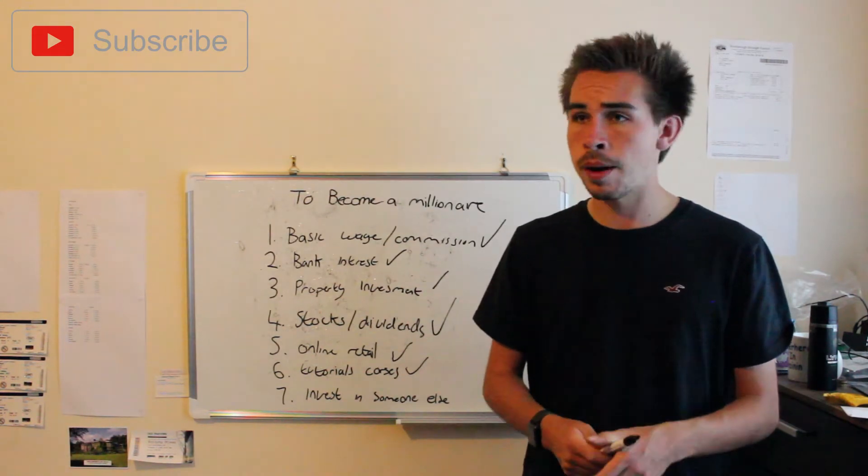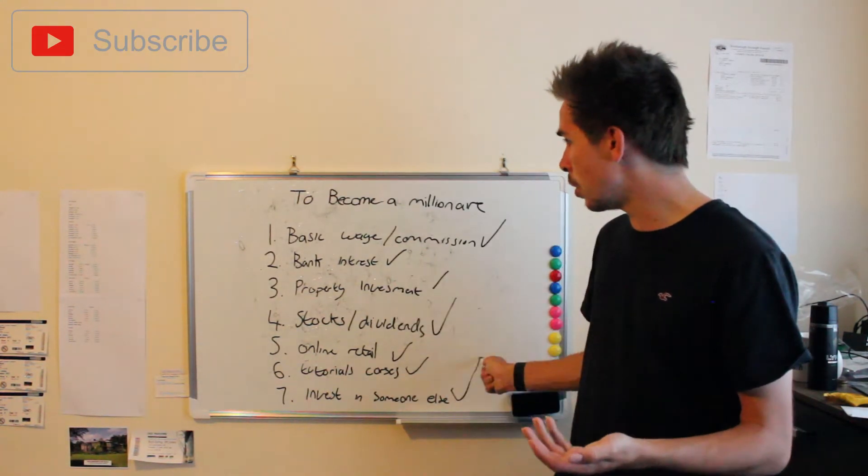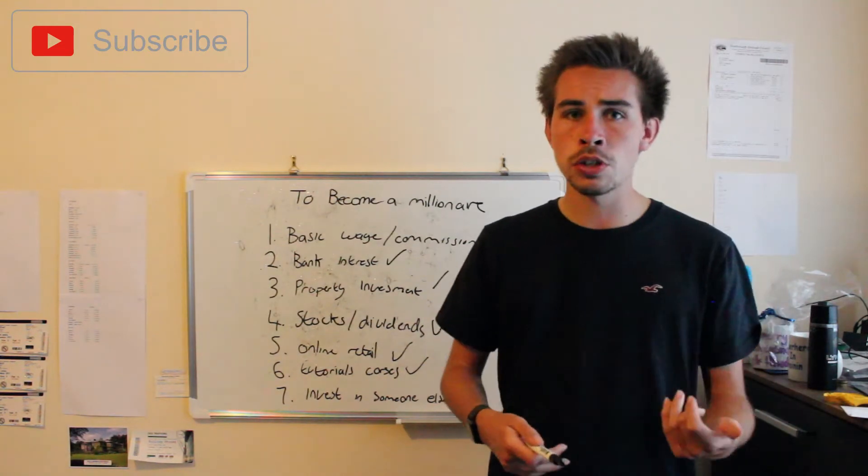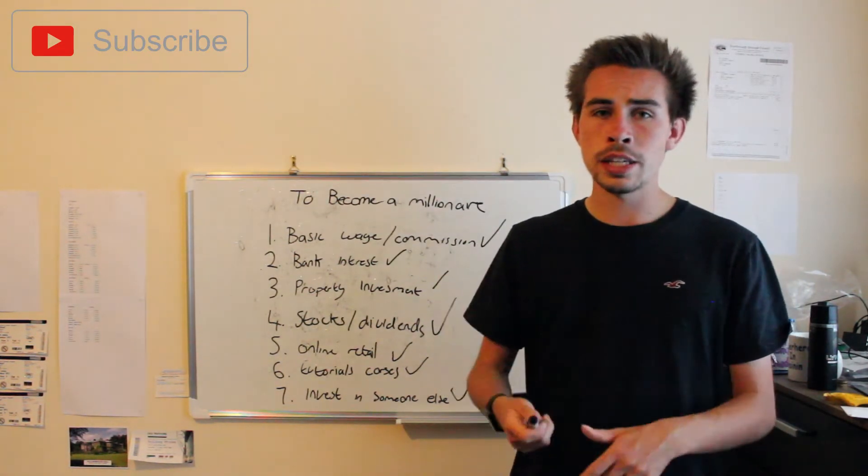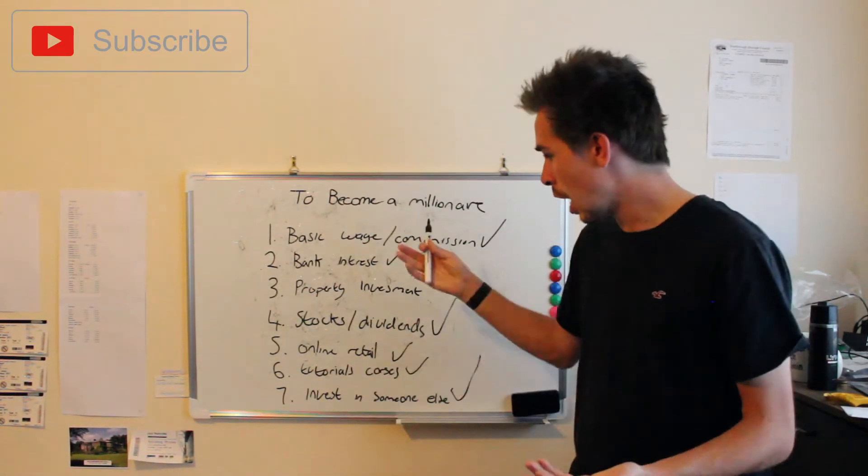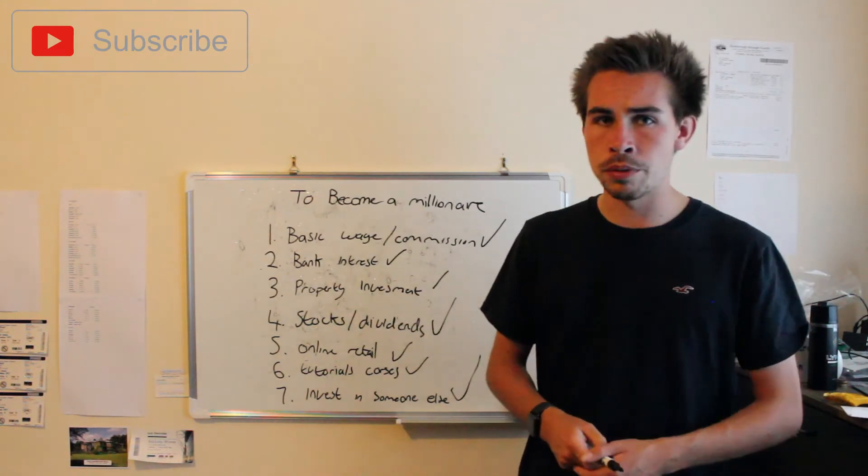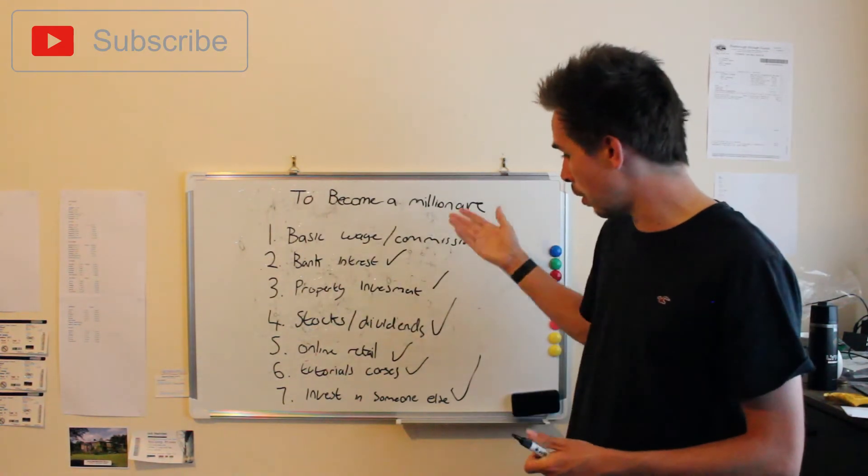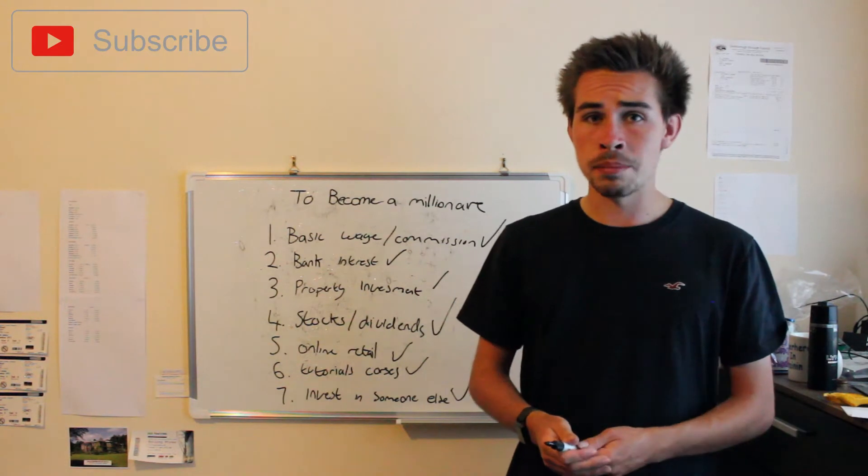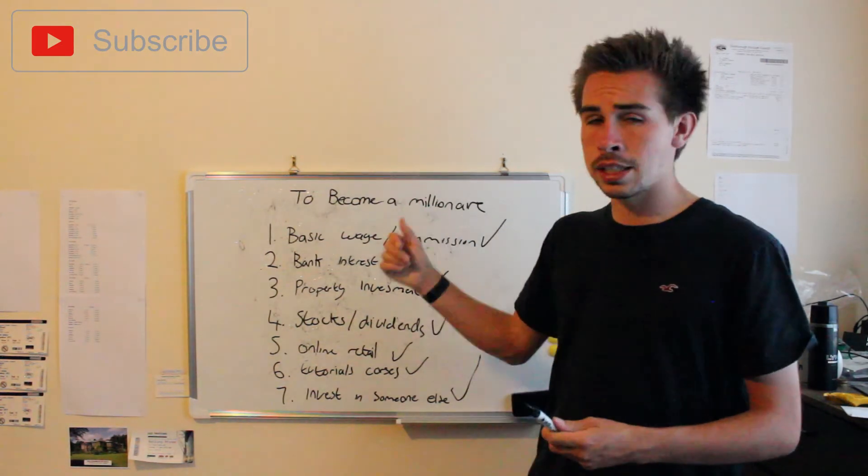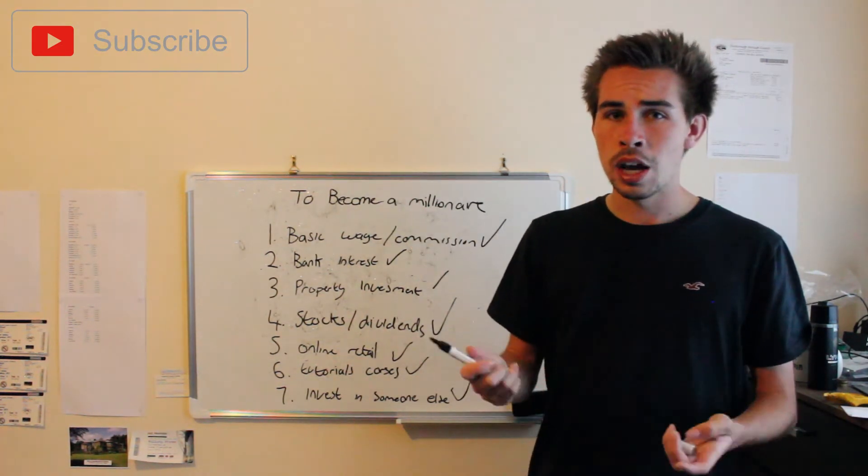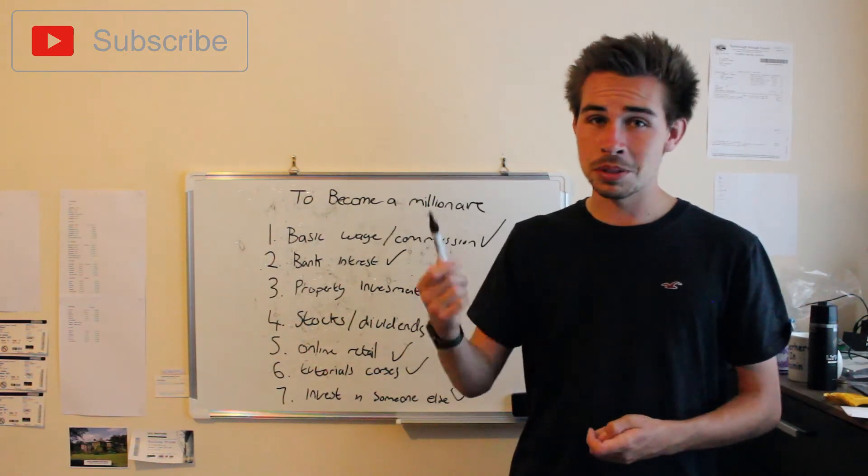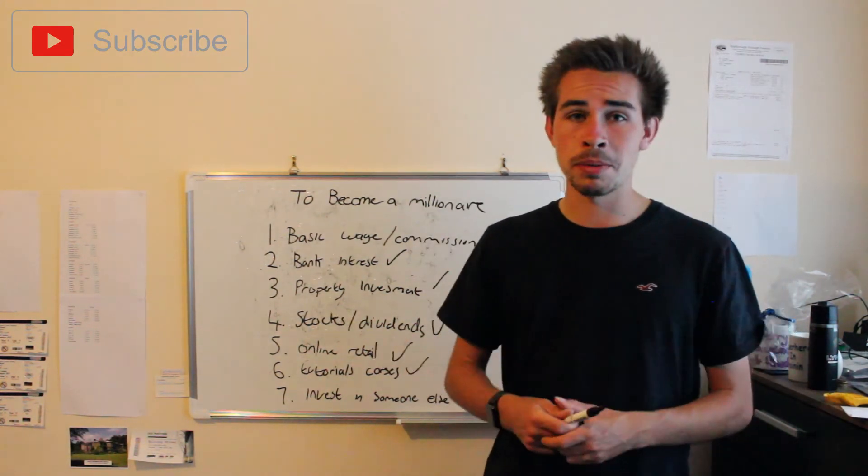So there are seven ways that you can increase your income to become a millionaire. They say that you need seven sources of income. And these are seven sources that I think would be really good ones. And from my point of view, I'm doing all seven. So hopefully one day we'll get to that status. Obviously, you can track it all because I'll be making the YouTube videos. But those are my recommendations, guys.